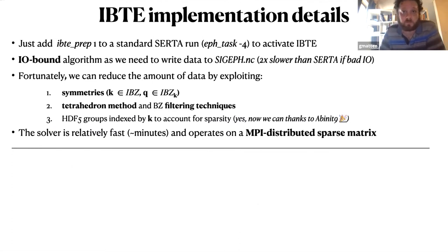At the level of the implementation, solving the IBTE requires the inclusion of the specification of this variable in the input file plus the standard SERTA run. The algorithm is IO-bound in the sense that in order to construct the functional, we have to write some data to the netCDF file. So if you have a machine with very bad IO, the IBTE can be twice slower than the SERTA. But we can use symmetries, the tetrahedron method, to reduce the memory saved on file. And last but not least, the solver is relatively fast.